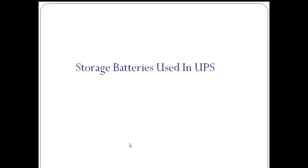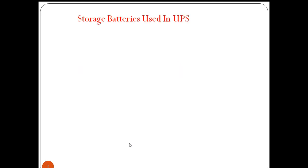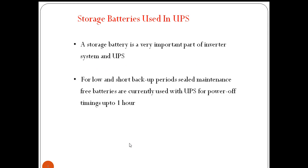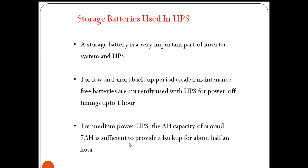Storage batteries store electrical energy in the form of direct current. This storage battery is a very important part of an inverter system in UPS. In the absence of power, the energy stored in these batteries is used — it is converted into AC and supplied to the critical load.